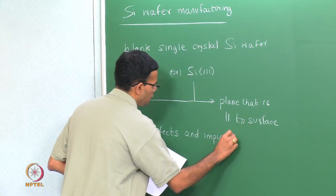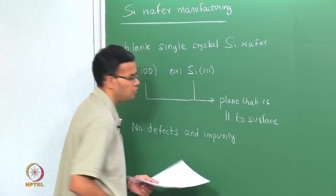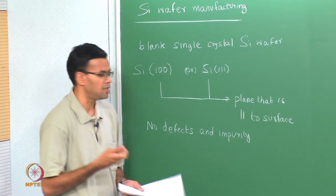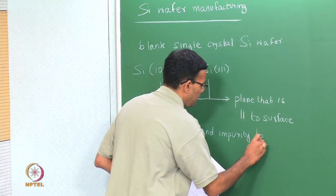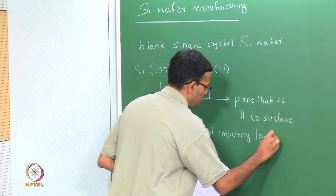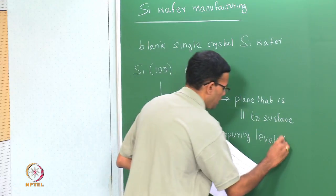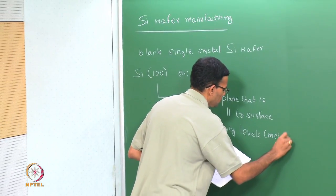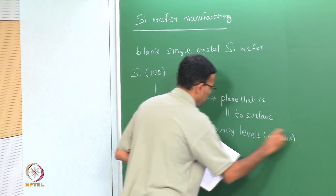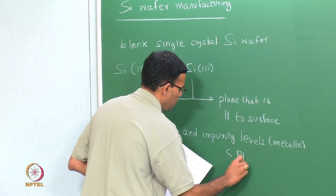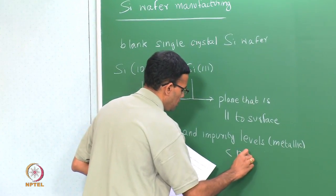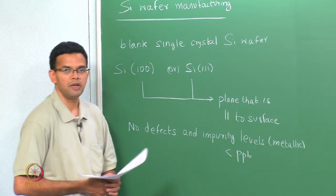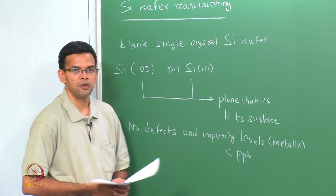This should not be confused with dopants. Dopants are impurities that are added intentionally. Impurity levels here refer to unintentional contamination — we want a material that is extremely pure.